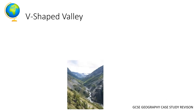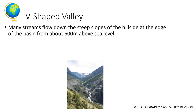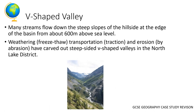In the upper course of the river, like most rivers, there is a V-shaped valley. This is when streams flow down the steep slopes of the hillside at the edge of the basin. Weathering also happens here — freeze-thaw occurs — and traction and erosion carve out these steep-sided valleys in the north of the Lake District.